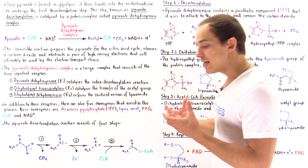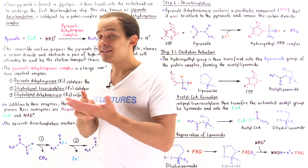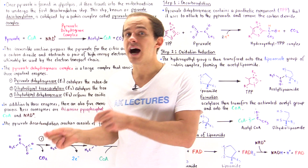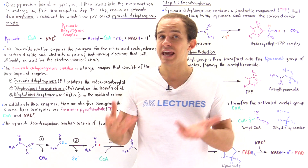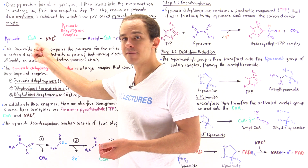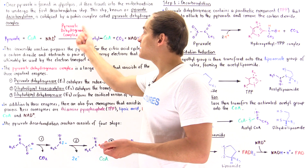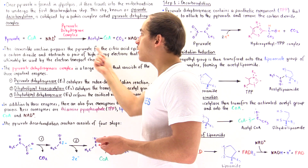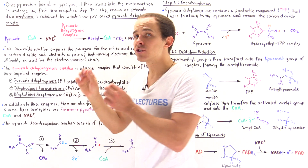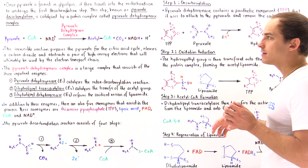This entire process releases a carbon dioxide molecule and attaches the two-carbon component of the pyruvate onto a special carrier molecule known as coenzyme A, or CoA. We form the acetyl coenzyme A complex, and this activates the two-carbon fuel source of the pyruvate so that it can be transferred into the citric acid cycle.